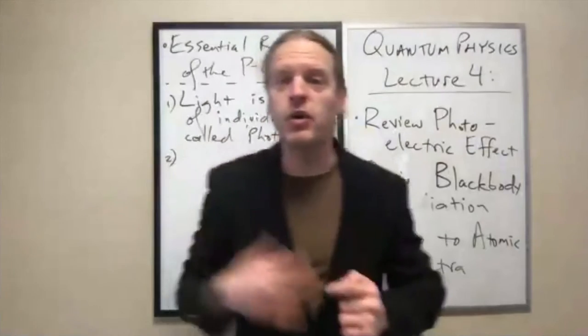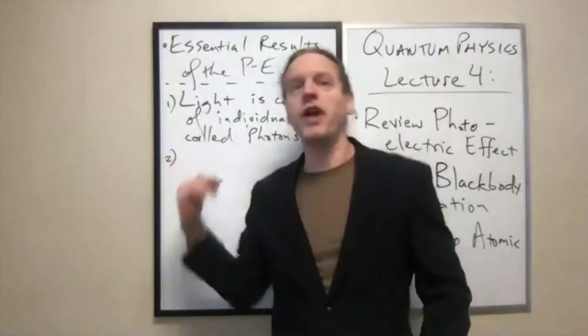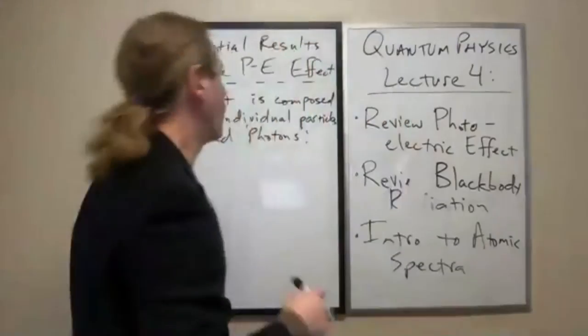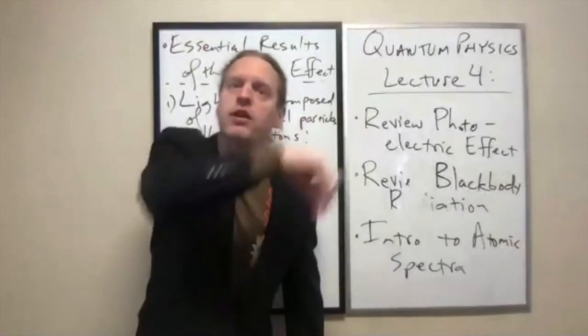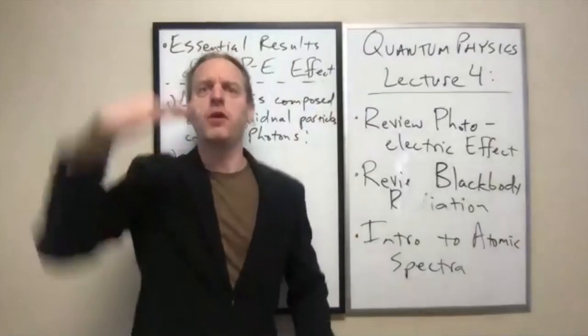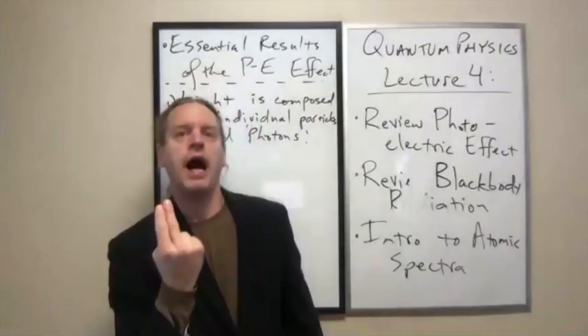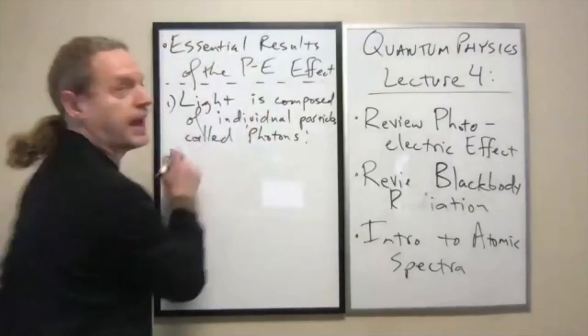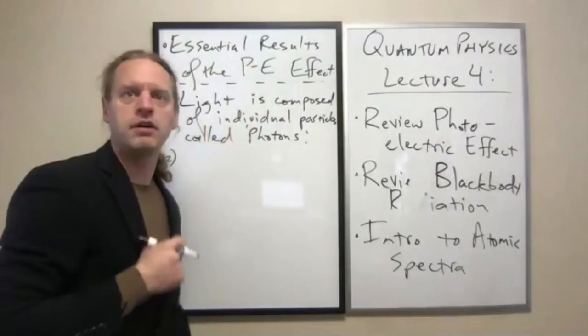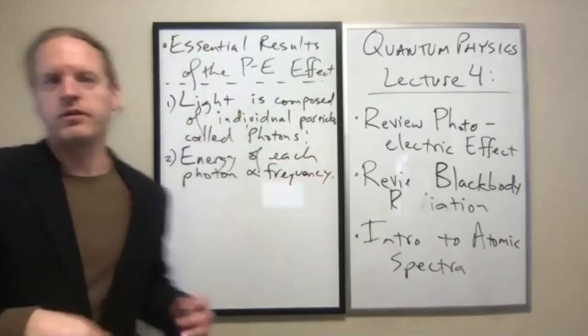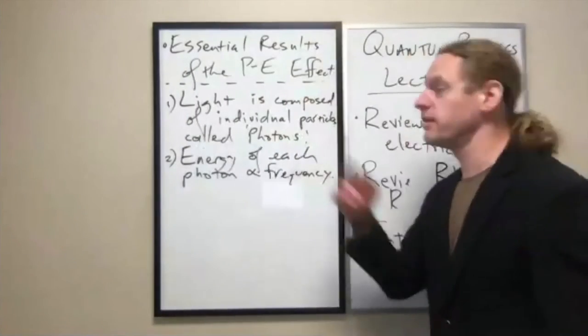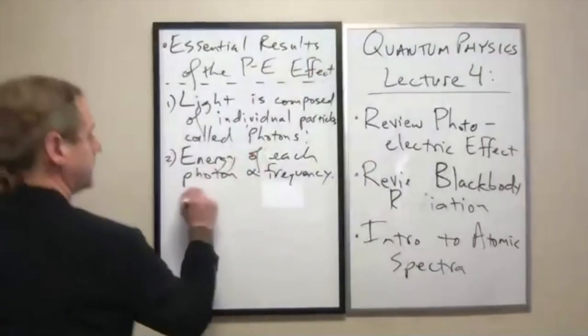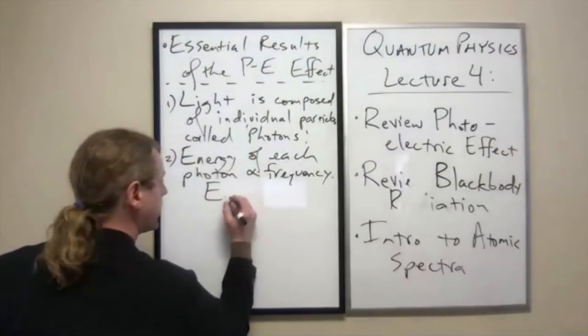Specifically number two: the amount of energy that a given photon carries is inversely proportional to the wavelength, or if you know the frequency of that photon, how often the electric or magnetic field oscillates back and forth, the energy is directly proportional to that frequency.